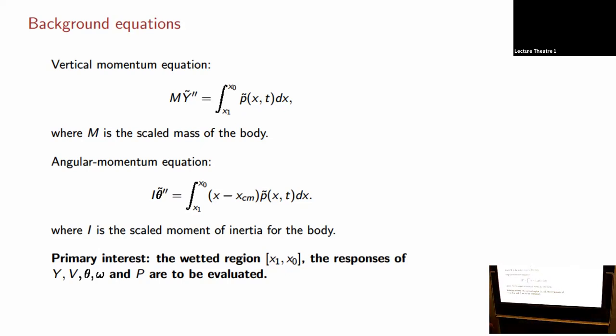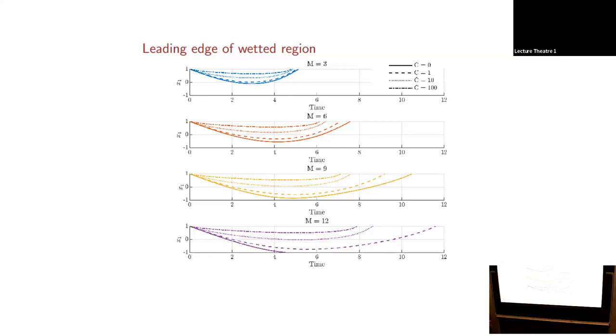The system has to be tackled numerically. It's very much reduced from the Navier-Stokes and Euler equations, but still needs numerical treatment. Here are some results for a particular type of body. First of all, M is three, showing X1 as a function of time. X1 creeps forward along the body and then goes back to the trailing edge at a time of about five.